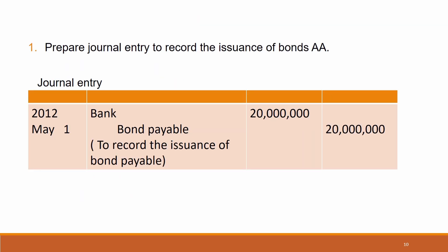First, prepare the journal entry to record the issuance of Bond AA. On 1 May 2012: debit bank RM20 million, credit bond payable RM20 million. The narration: to record the issuance of bond payable.